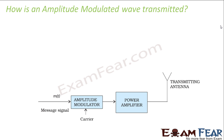So far it is clear. We have the message signal. It is made to pass through the amplitude modulator. What is inside the amplitude modulator I discussed in the previous slide. So that entire package together is known as the amplitude modulator. Out of that amplitude modulator will come the amplitude modulated wave. This wave is then made to pass through a power amplifier.